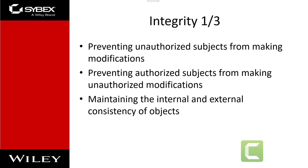Privacy refers to keeping information confidential that is personally identifiable or that might cause harm, embarrassment, or disgrace if revealed. Seclusion involves storing something in an out-of-the-way location with strict access controls. Isolation is the act of keeping something separate from others to prevent commingling or disclosure of information. Each organization needs to evaluate the nuances of confidentiality they wish to enforce.